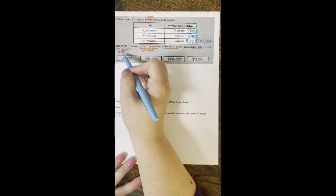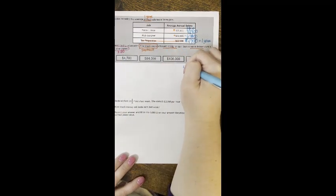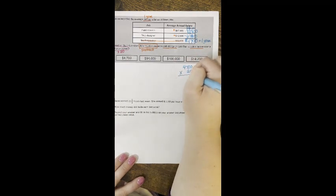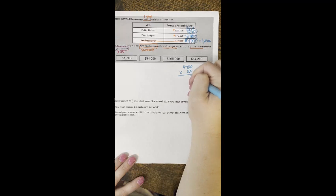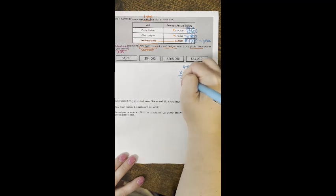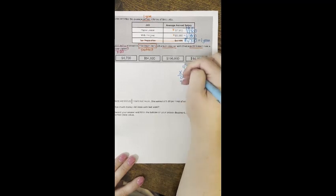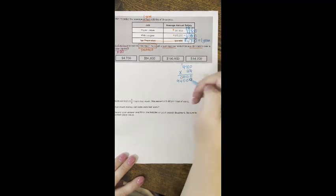They want to know over 20 years, so we're going to take our $4,700 and we are going to multiply it by 20 years. Zero across, mark it out. Now I'm multiplying my tens place, so tens place has that filler zero. 14 and 9.